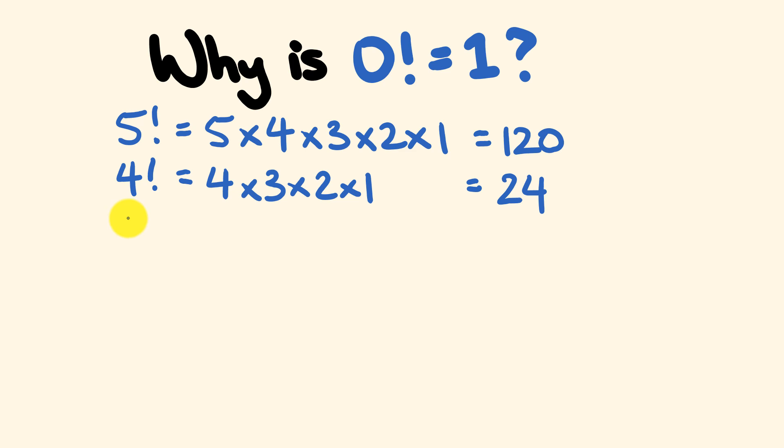Continuing this now to three factorial. Three factorial is going to equal three, that number right there, multiplied by two, multiplied by one. That's equal to six.